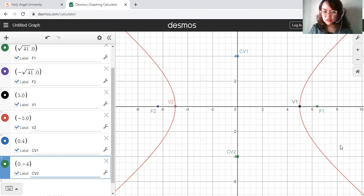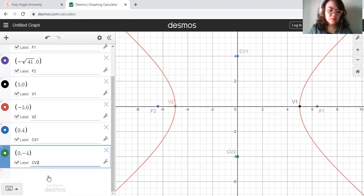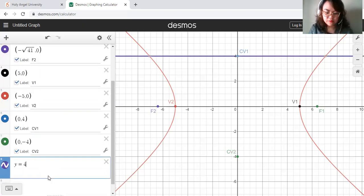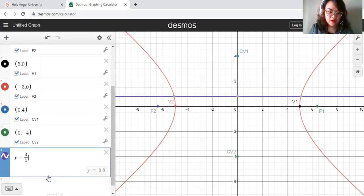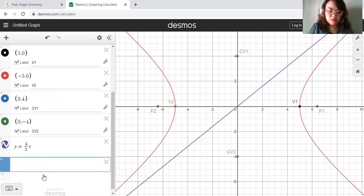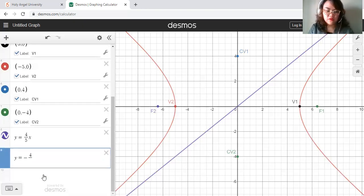That tells you how wide your branches would be. And then last would be the asymptotes. For the asymptotes, Y is equal to B over A. What is B? 4 over 5. 4 over 5X. And then the other one is the negative asymptote, Y is equal to negative 4 over 5X.